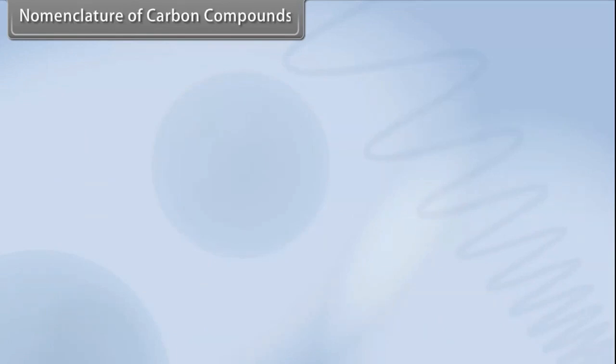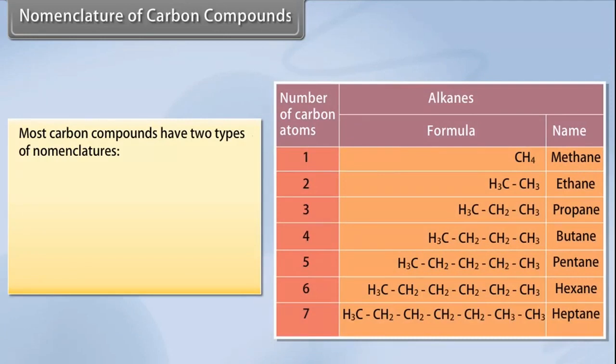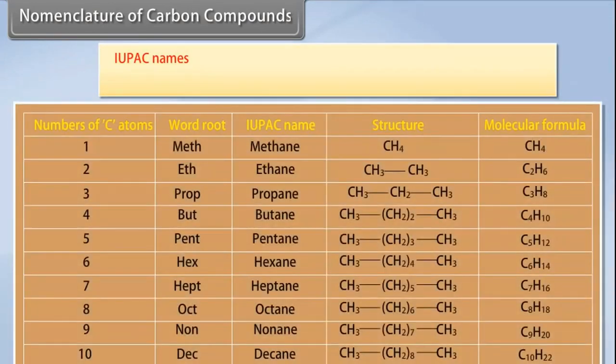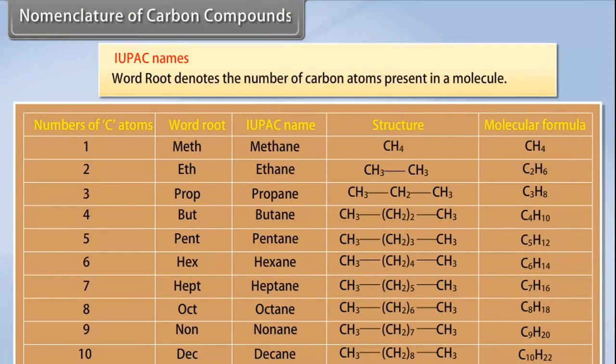Nomenclature of carbon compounds. The system of assigning a proper name to a particular carbon compound is called nomenclature. Most carbon compounds have two types of names. Trivial names are the commonly used names of carbon compounds, derived mostly from the source of the compound. However, names formed using this manner are ambiguous and repeating. IUPAC names: A committee called the International Union for Pure and Applied Chemistry, IUPAC, put forward a system of giving scientific names to carbon-based compounds. These names are followed all over the world and are called IUPAC names.